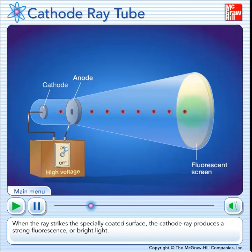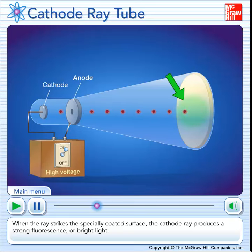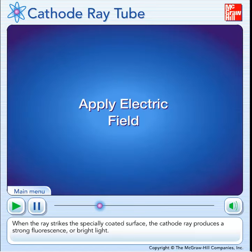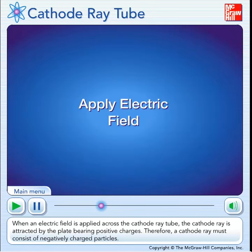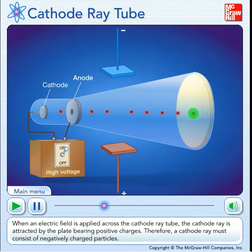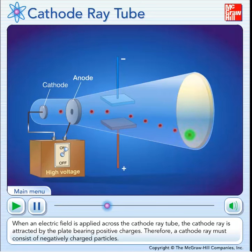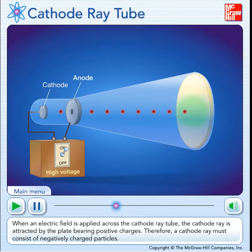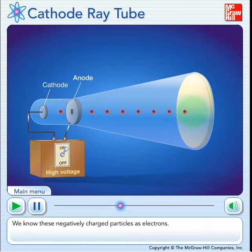When the ray strikes the specially coated surface, the cathode ray produces a strong fluorescence, or bright light. When an electric field is applied across the cathode ray tube, the cathode ray is attracted by the plate bearing positive charges. Therefore, a cathode ray must consist of negatively charged particles. We know these negatively charged particles as electrons.